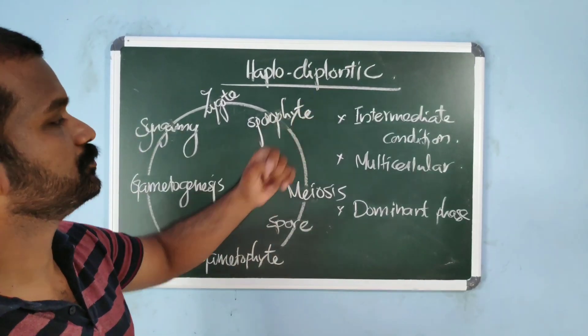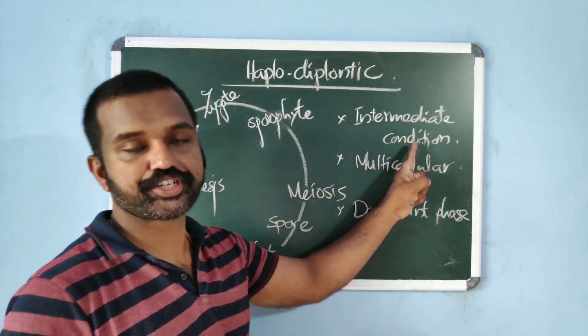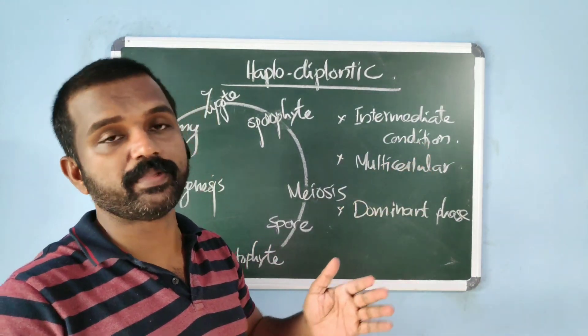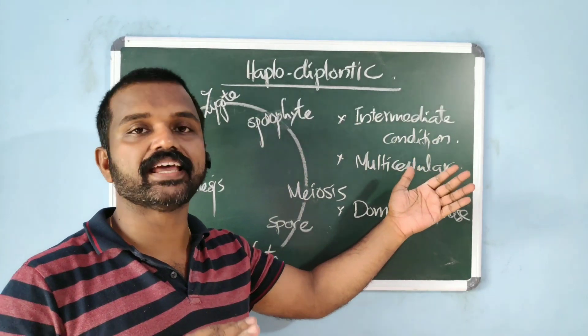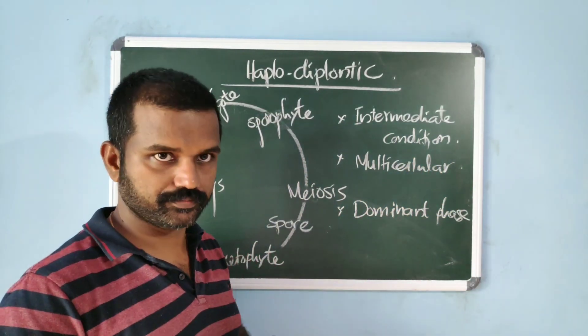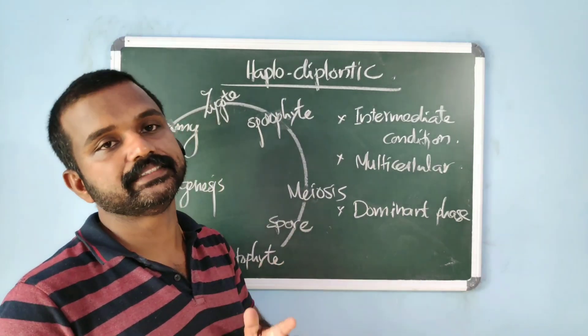Haplodiplontic life cycle is an intermediate condition. Intermediate condition means in between the two extremes, that is haplontic life cycle and diplontic life cycle. Intermediate condition is exhibited by both bryophytes and pteridophytes.